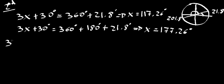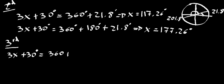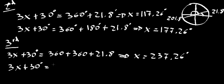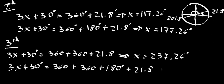For the third round around the circle, 3x plus 30 degrees is also equal to 360 plus 360 plus 21.8. Working it out, we get x equal to 237.26 degrees. Also, 3x plus 30 equals 360 plus 360 for the first two turns, plus 180 plus 21.8. Working it out, x is also equal to 297.26 degrees.